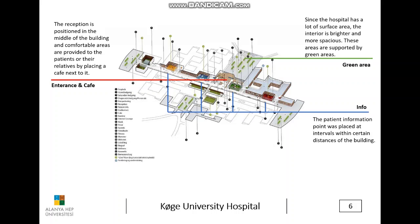In this diagram, the entrance café area: the reception is positioned in the middle of the building, and comfortable areas are provided to patients and their relatives by placing a café next to it. The hospital has a lot of surface area, so the interior is brighter and more spacious, supported by green areas.